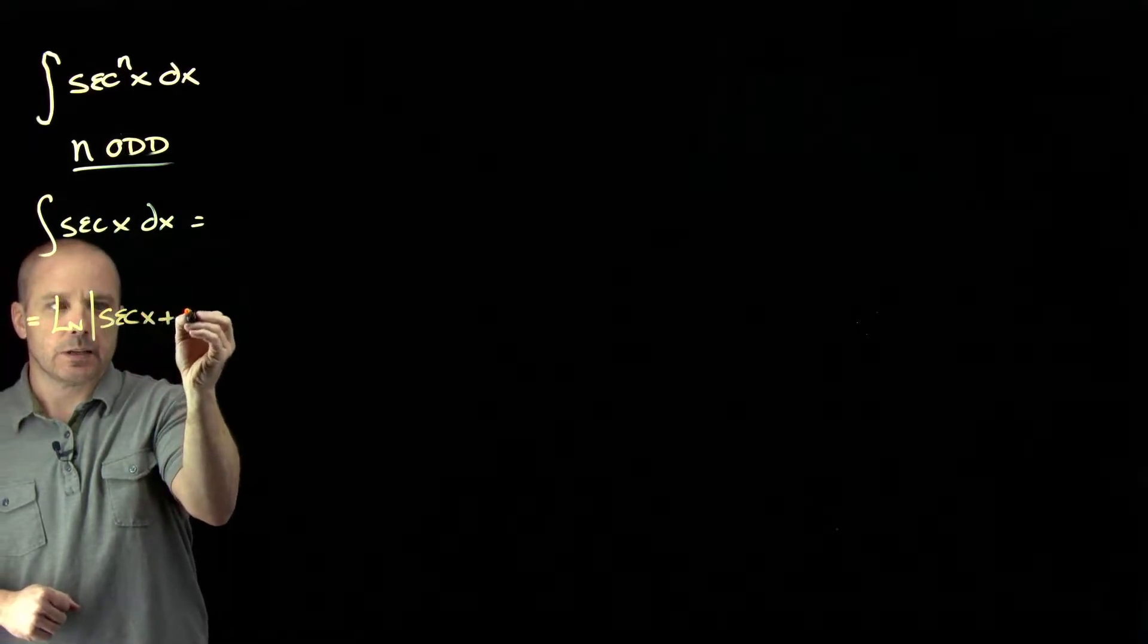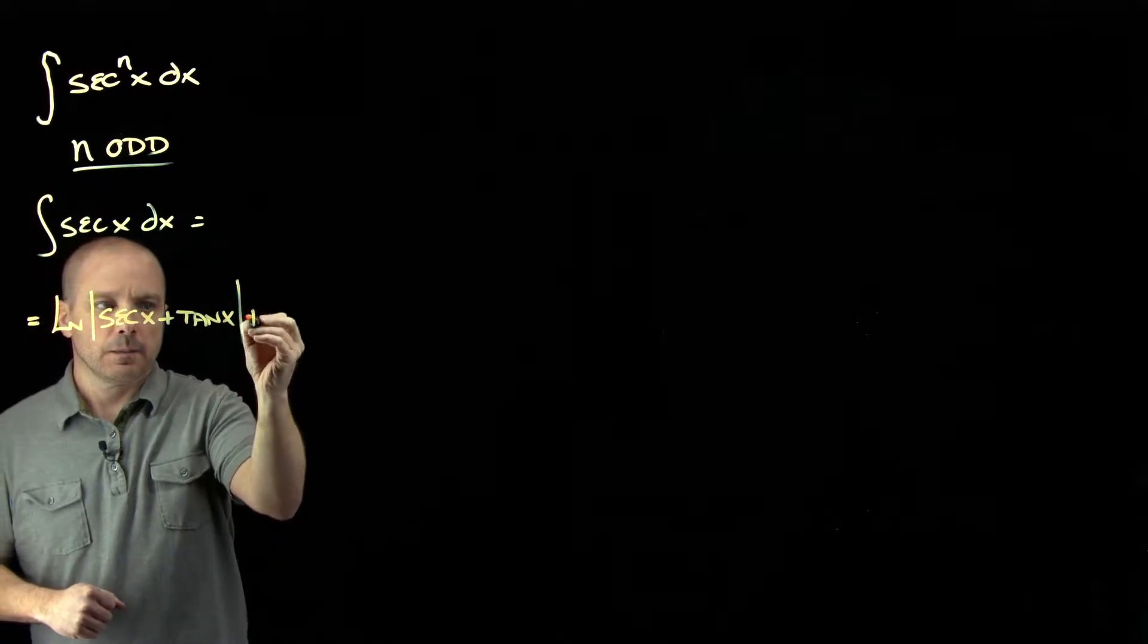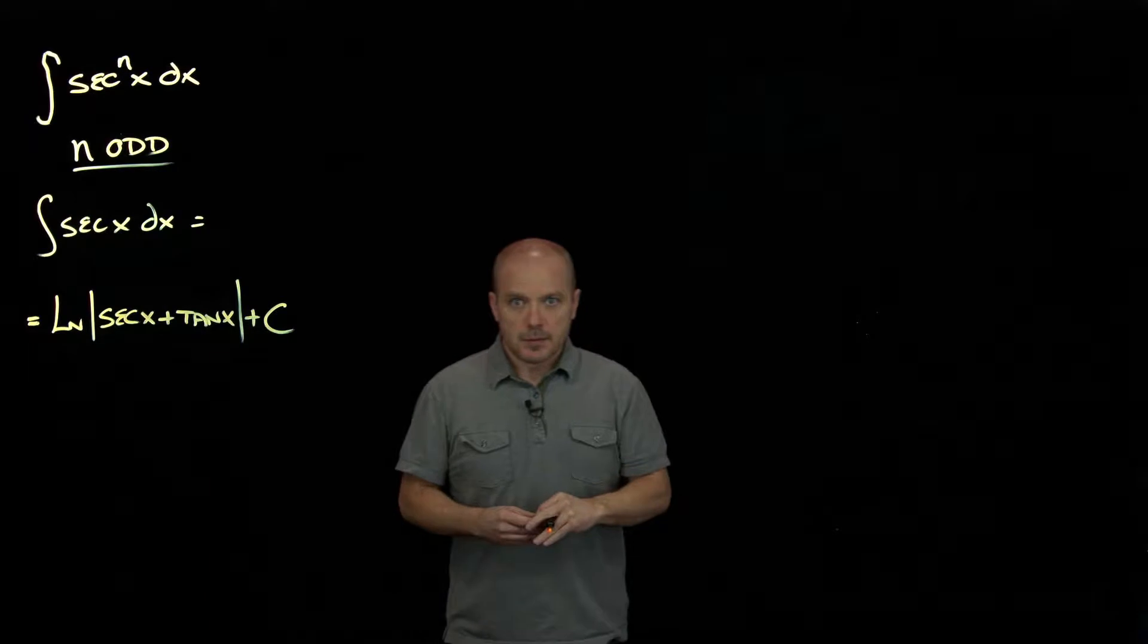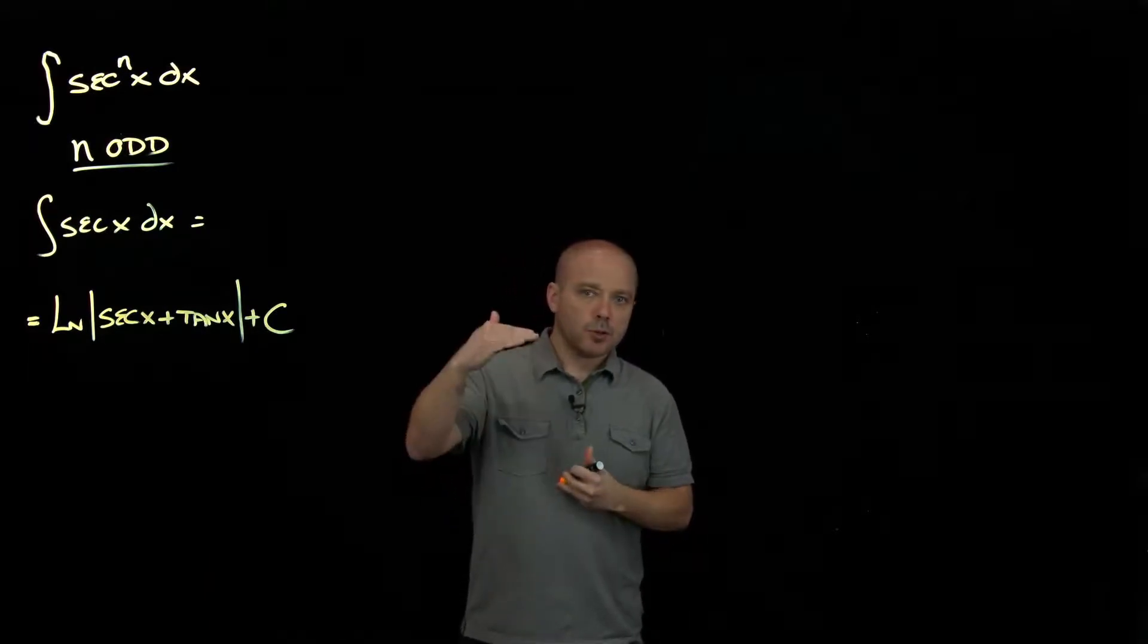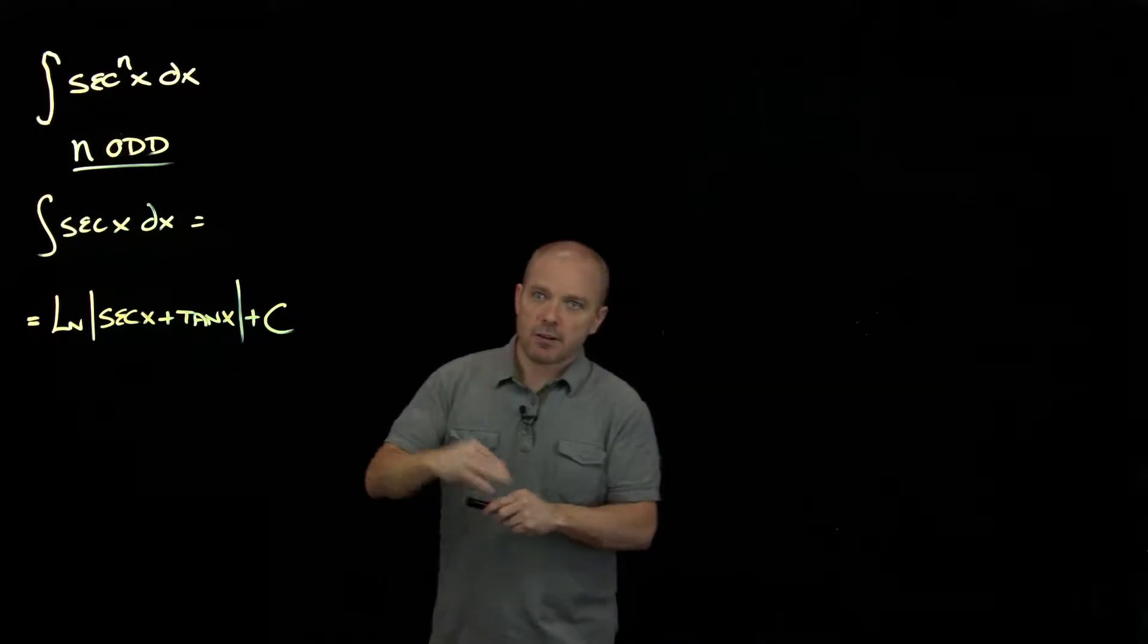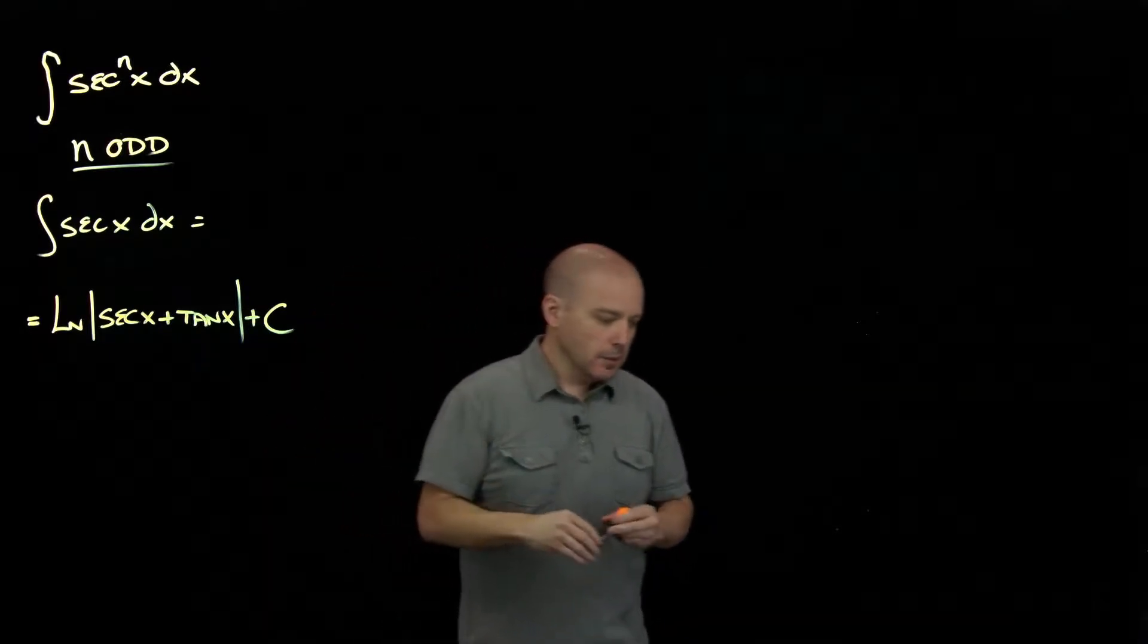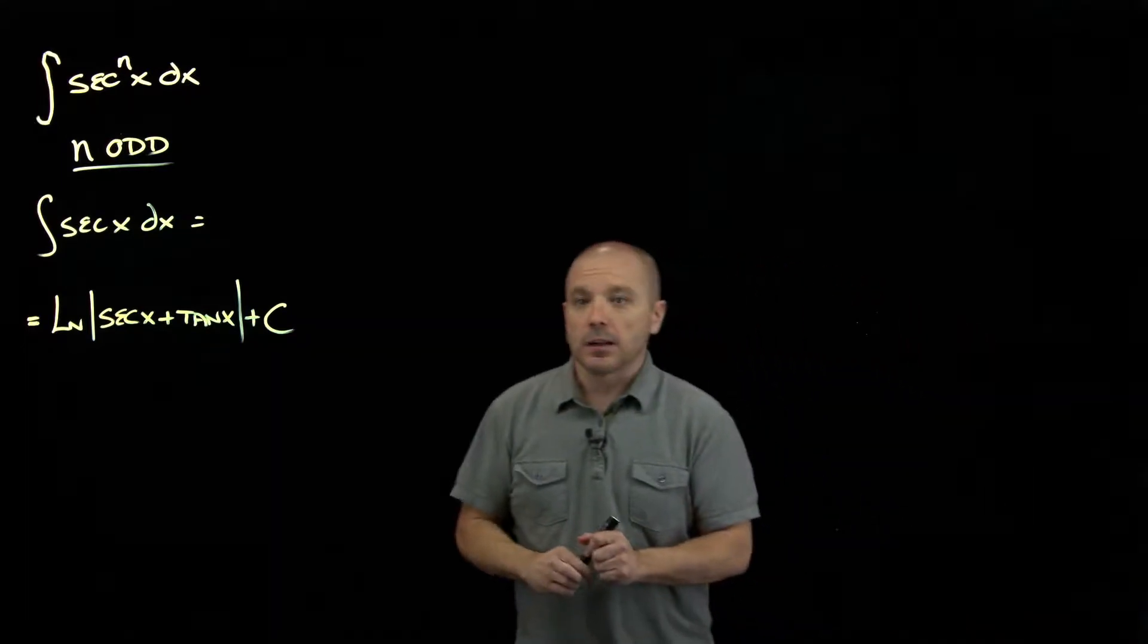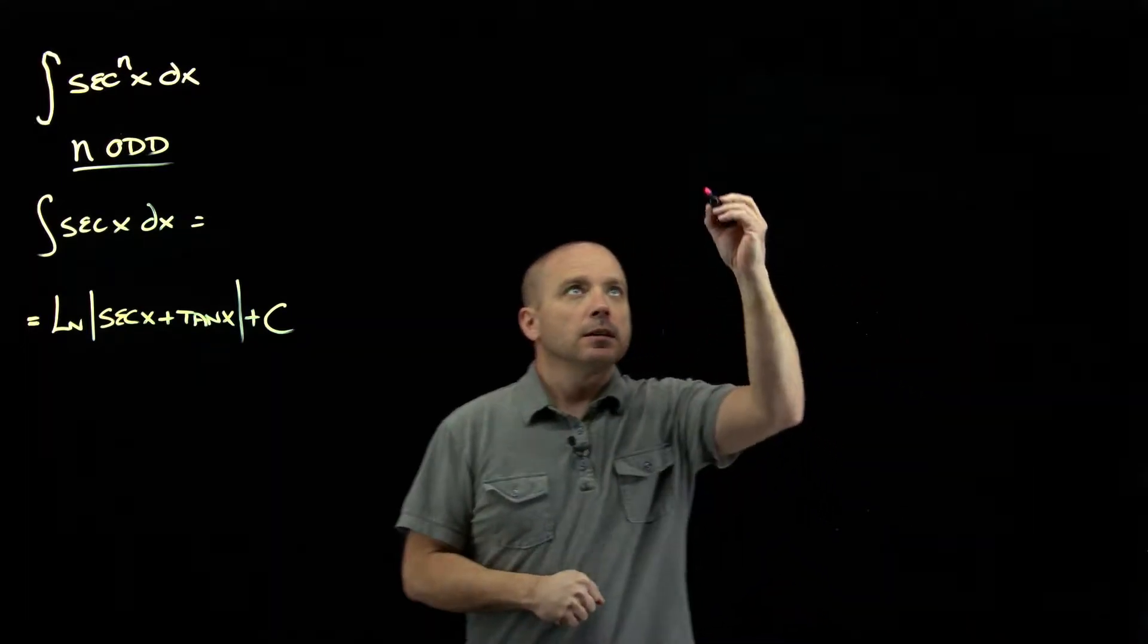Let's go up to the next odd, which would be cubed, and then every odd above that will be a similar process. So let's see what happens to integrate secant cubed.